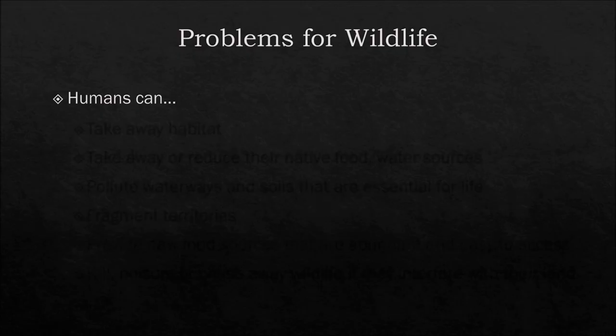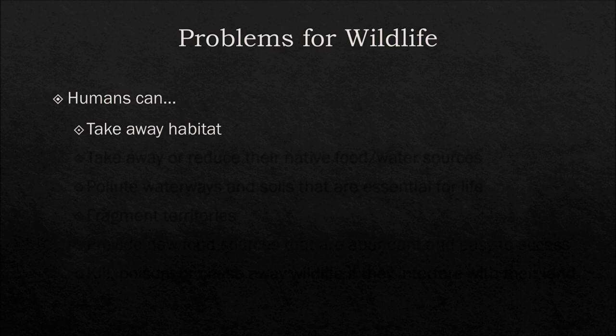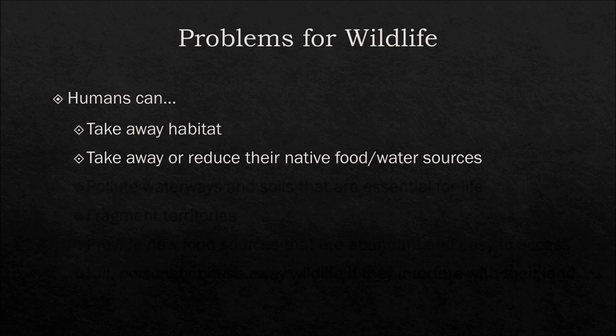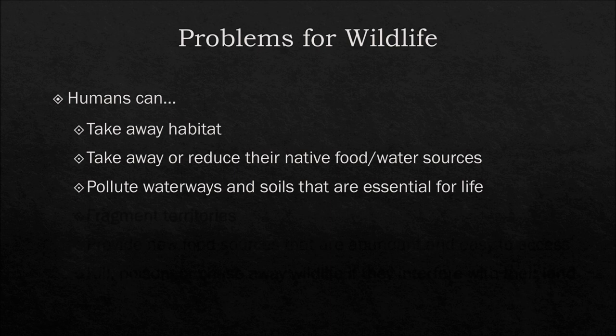While wildlife can pose several problems for humans, the same can be said that humans can pose lots of problems for wildlife. Humans can take away habitat to be converted to agricultural land or grazing land. They can take away or reduce species' native food and water sources — through clearing habitat or through practices like irrigation. Humans can pollute waterways and soils that are essential for life through the use of herbicides and pesticides. They can fragment territories where wildlife don't have enough land or there are barriers in their way of traveling or migrating to different areas of habitat.